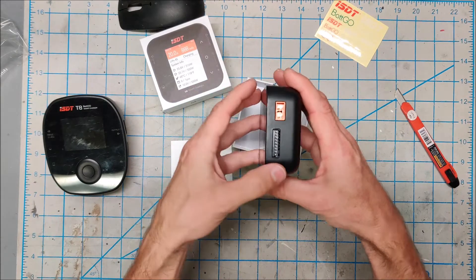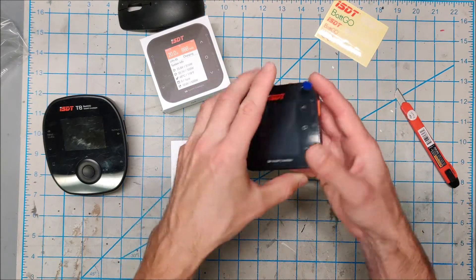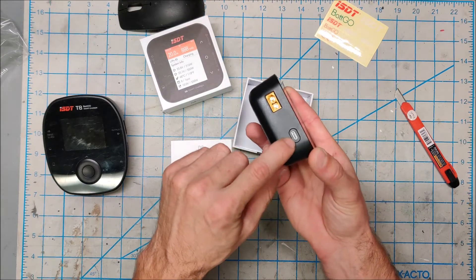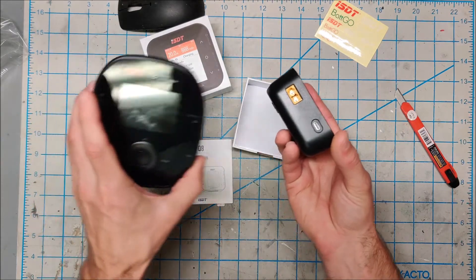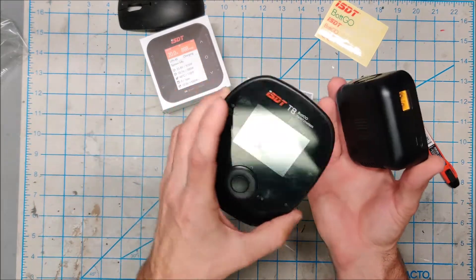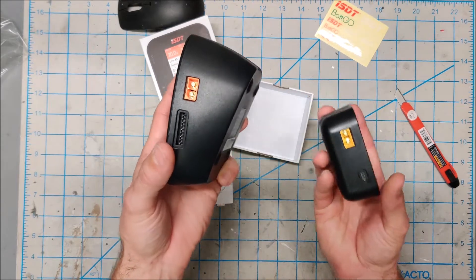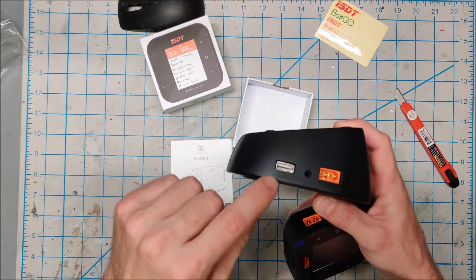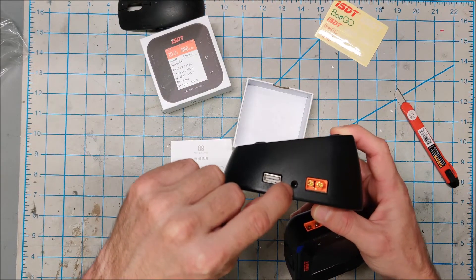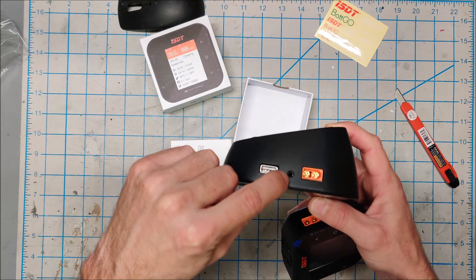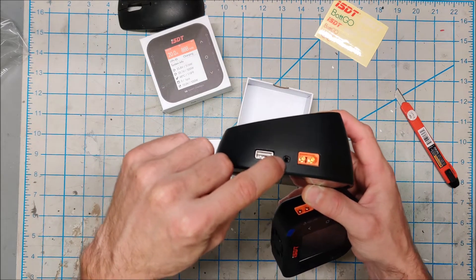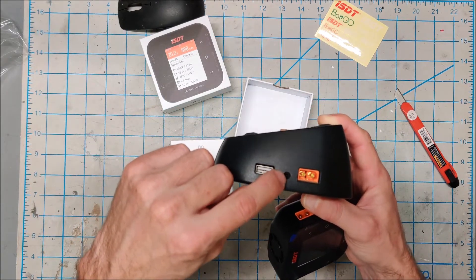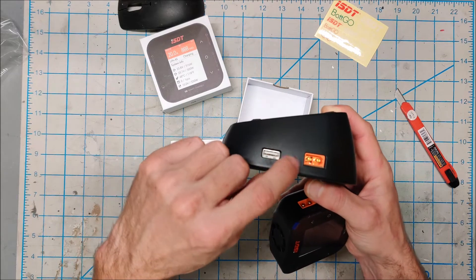Same interface. Everything is XT60 connectors, which is nice because I use a lot of XT60s on all my stuff. And then the one nice thing about this is this actually has firmware updates through USB. The T8 does not have any USB on it. You actually have to buy a weird special cable that uses a three and a half millimeter audio jack to do the updates. That's actually the update port.